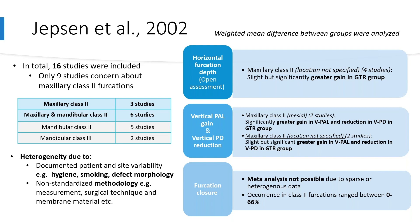With regards to vertical assessments, a significantly greater gain in vertical probing attachment level and reduction in vertical probing depth was detected in maxillary class 2 mesial furcations, and a slight but significantly greater gain in these same parameters was noted in the maxillary class 2 group overall, though location was not specified. A meta-analysis for furcation closure was not possible due to sparse and heterogeneous data, but furcation closure ranged between 0 to 66%, which is a very wide range.